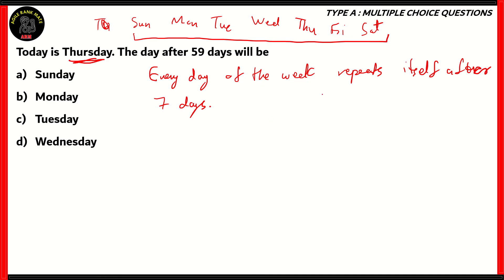So what I'm trying to say is every day of the week repeats itself after seven days. For example, if the first day is Thursday, the second day is Friday, the third is Saturday, and so on, until the eighth day is also another Thursday. So we have 59 days here. 7 times 8 gives you 56, and 7 times 9 gives you 63. So therefore, 7 times 8 is what we're looking for.